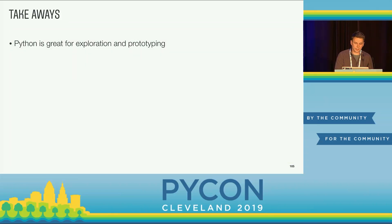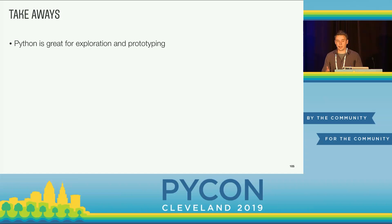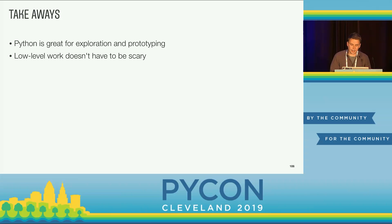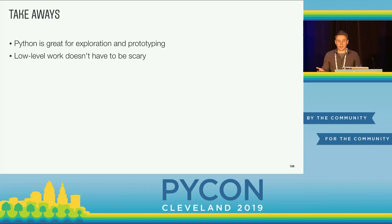So, takeaways. First off, Python is awesome for exploration and prototyping. At this point we have the basic structure of the compiler in place and we can compile real functions. We can't compile a whole lot yet, but we actually have a fully-fledged working compiler, and we have the structure to build on to make this into something more real. We did that in about 25 minutes — it's an incredibly small amount of code, like 200 or 300 lines. Low-level work doesn't have to be scary. We did all of this from Python, generated native machine code, and executed it. Now we have a JIT that has a REPL, which is pretty cool.